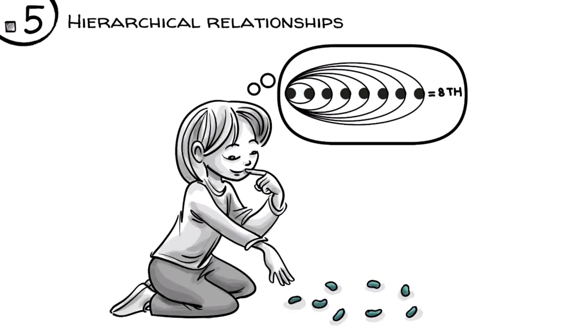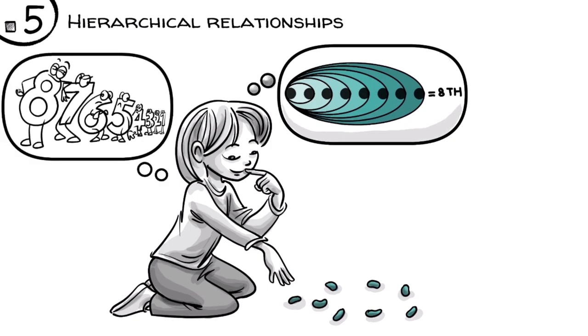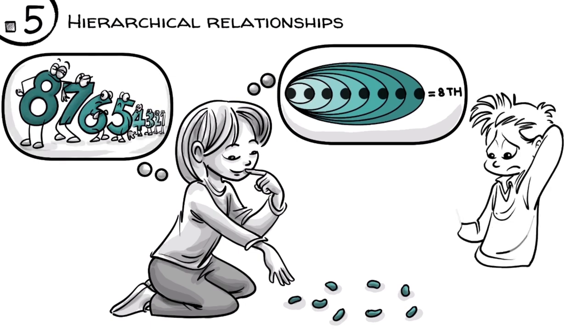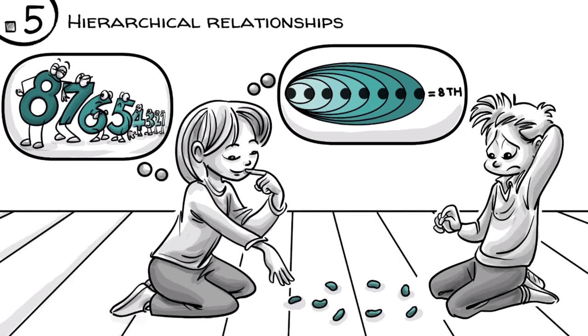In other words, eight always includes one, two, three, four, five, six, seven. The idea of eight is therefore a hierarchical relationship between the eighth object and all those preceding it. If we don't learn to do this sort of abstraction by doing lots of math in our heads, we won't be able to form a solid foundation for arithmetic.